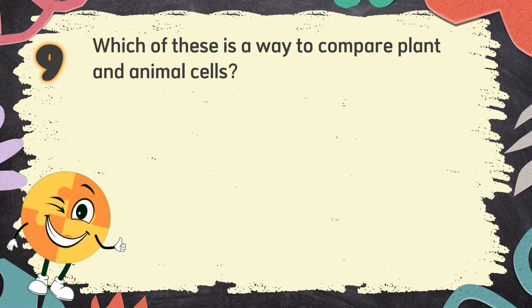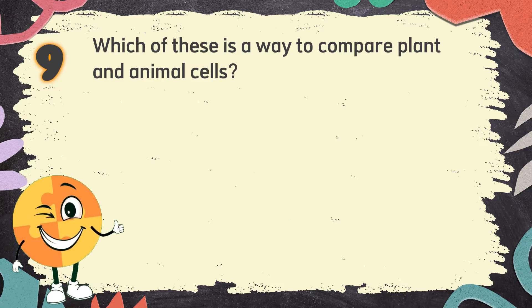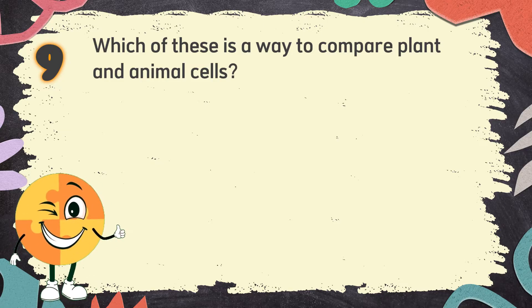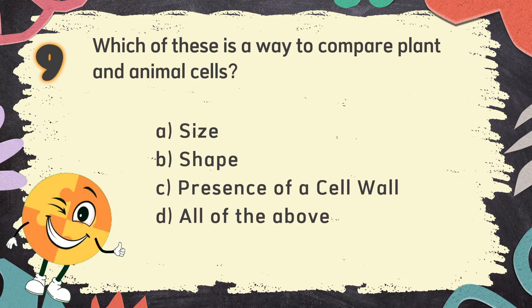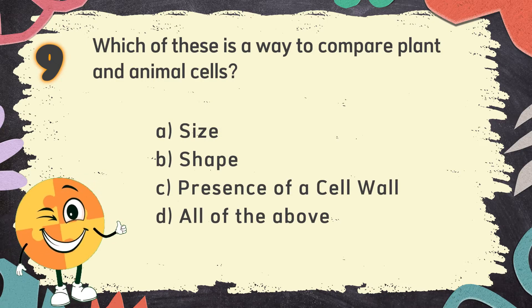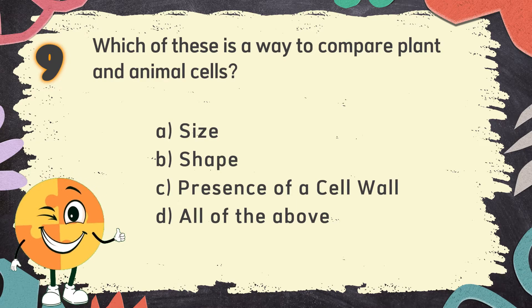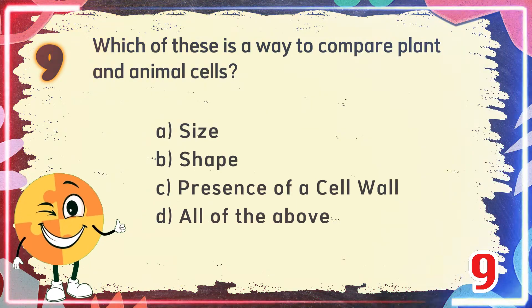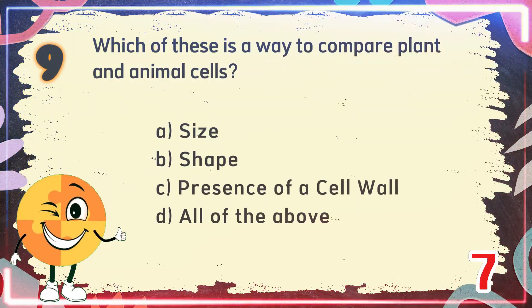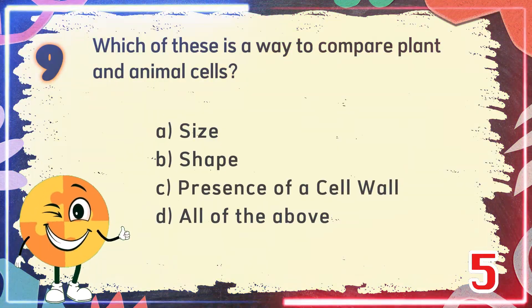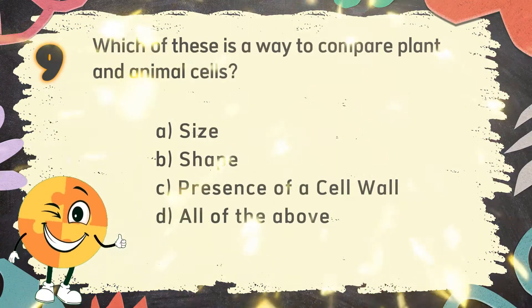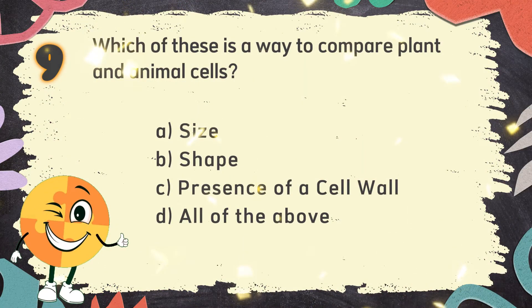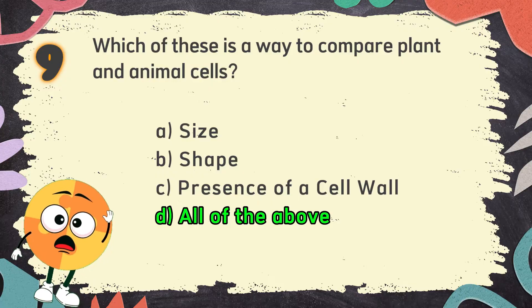Number 9: Which of these is a way to compare plant and animal cells? The choices are: A. Size, B. Shape, C. Presence of a cell wall, D. All of the above. The correct answer is D. All of the above.